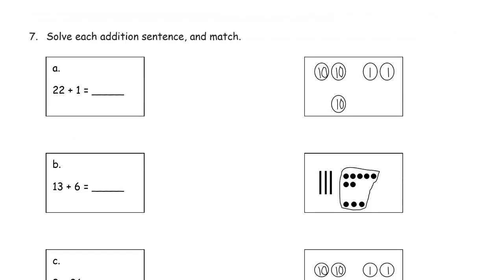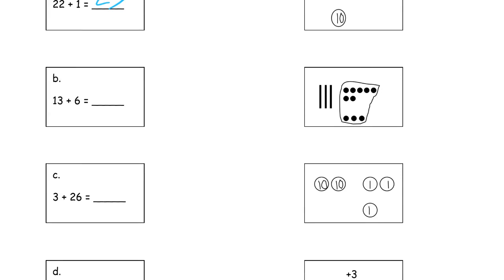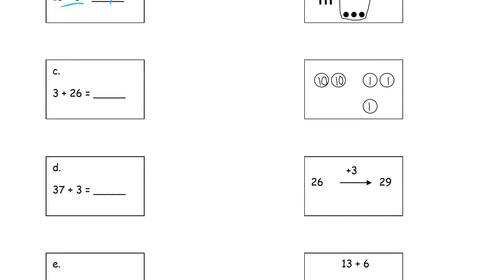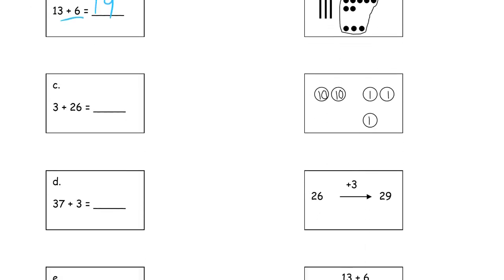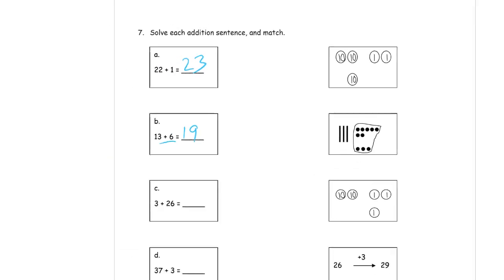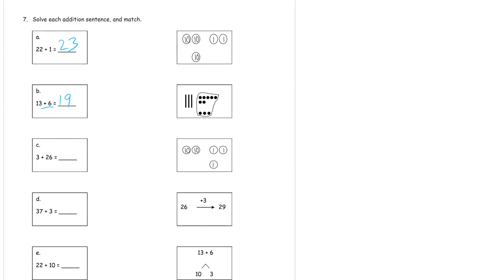And now we're solving each addition sentence and matching. So 22 plus one more, 23. No reason to make it any harder than that. And then we see this 13 plus 6. If you know 3 plus 6, you know that's 9. And 10 more, 19. The 22 plus one. I need a 22. Here we go. This line right here has two 10s and two 1s. That's the 22, and that's the 1. So that matches up.